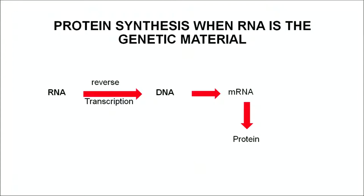In the case of retroviruses such as HIV, RNA is the genetic material. Once the virus enters the body of the cell, the RNA is changed to DNA with the help of an enzyme called reverse transcriptase - this process is known as reverse transcription. Once integrated into the DNA, it then makes RNA and then proteins. So in retroviruses there is an additional step: RNA is first changed into DNA before it can utilize the machinery of the host.